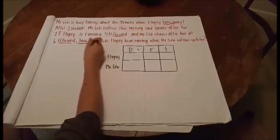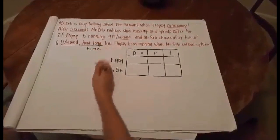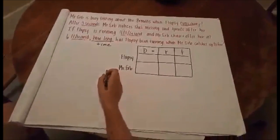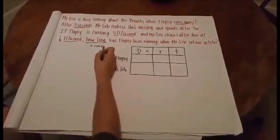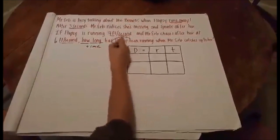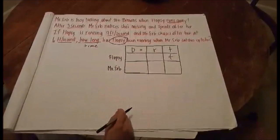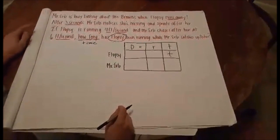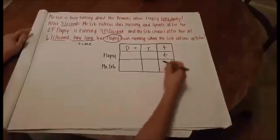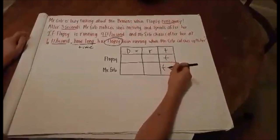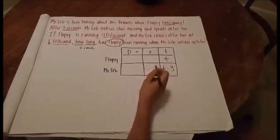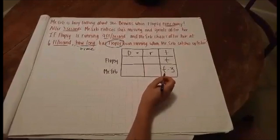How long, so we're talking about time, has Flopsy been running when Mr. Herb catches up to her? So if we're talking about time and we're trying to figure out Flopsy's time, then I'm going to put a T in for time for Flopsy. Now, Mr. Herb ran three seconds later. So we actually have to say that mine is T minus three, because I've run for three seconds less than Flopsy has.